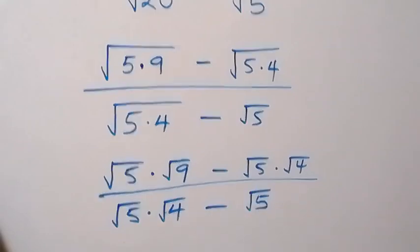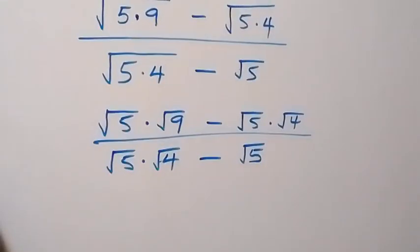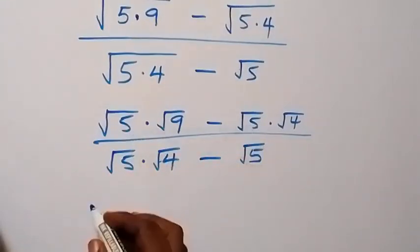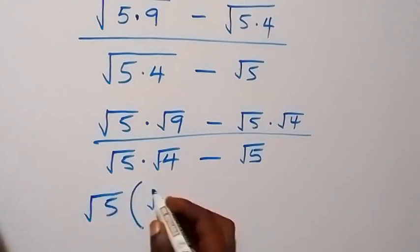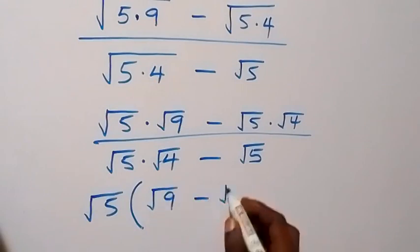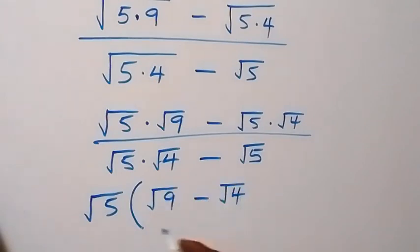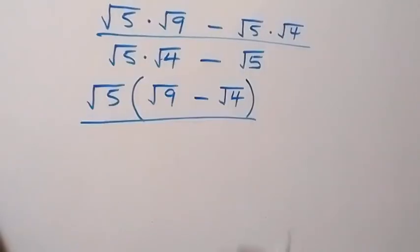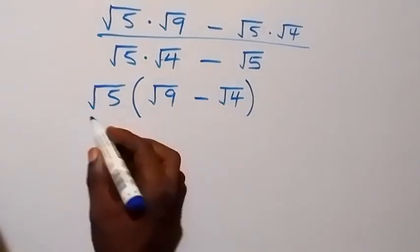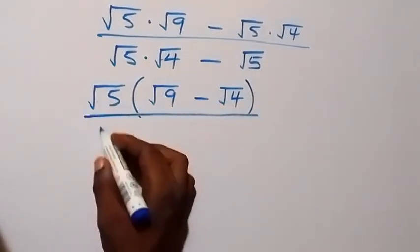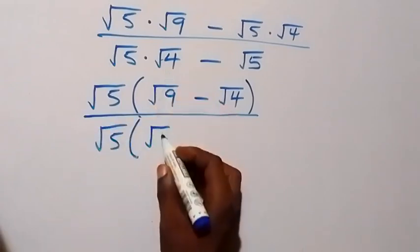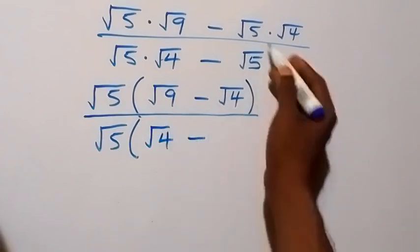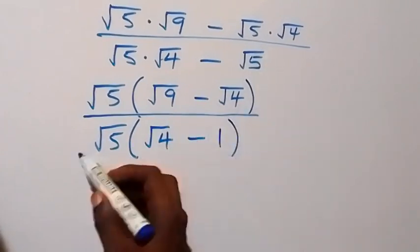From here we discover that we have root 5 common, so we take it out. This will be root 5 into bracket — root 9 minus root 4 — then divided by root 5 into bracket — root 4 minus 1. Root 5 cancels out from numerator and denominator.